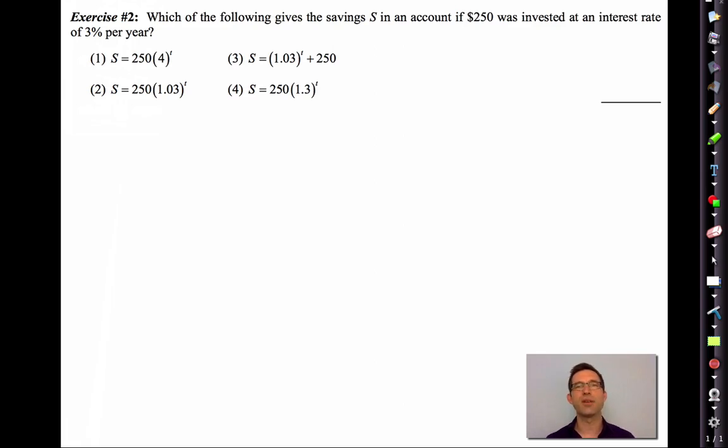Let's jump into a problem. Exercise two. Which of the following gives the savings, S, in an account if $250 was invested in an interest rate of 3% per year. Well, think about this a little bit. Well, we could just follow what's in that box. But the plain fact is if we're increasing by 3% per year, that means that we get to multiply by 1.03. That's what we multiply by every year. And we're starting off with $250. This just simply tells me how many times I got to multiply. So my savings, 250 times 1.03 to the T is choice two. So if you got that right, you definitely have the hang of this.